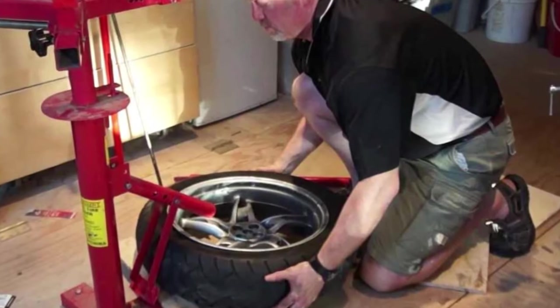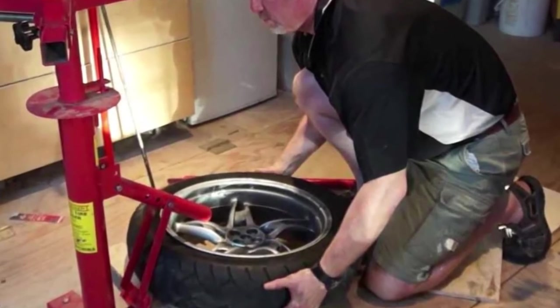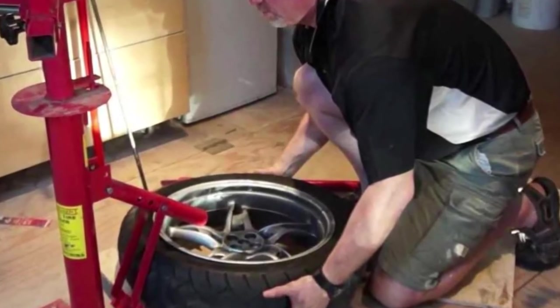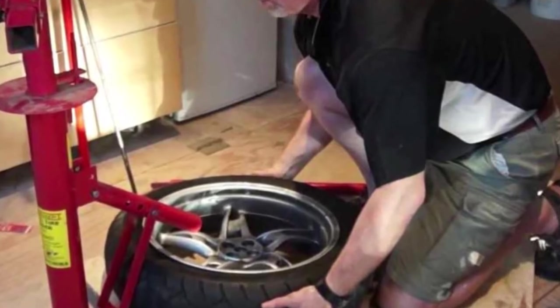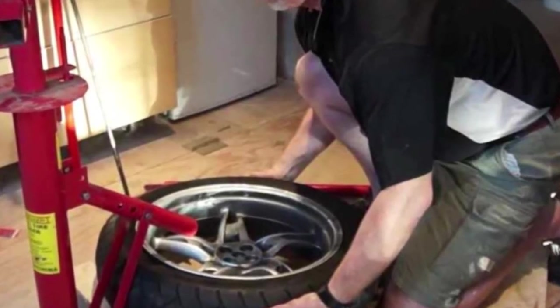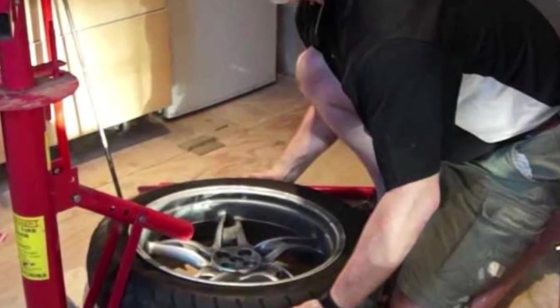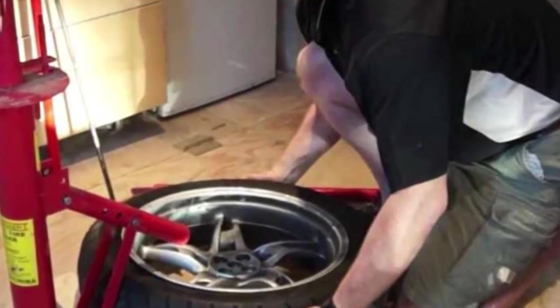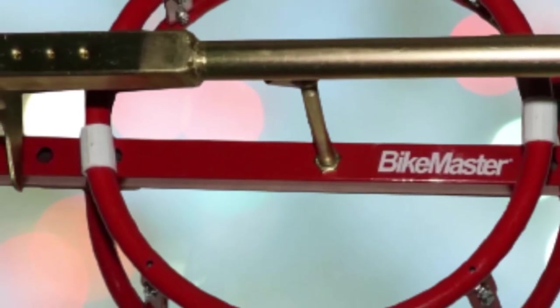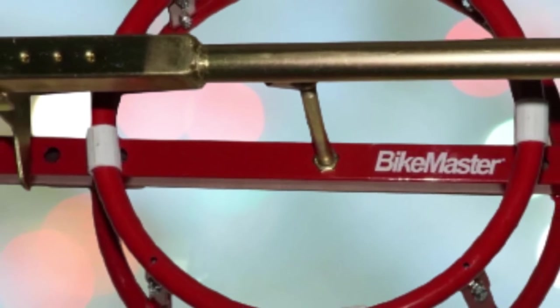It takes tire changes from frustrating to quick and easy, smoothing out the process with an included adjustable bead breaker paired with an extra-long handle just for stubborn beads. It'll work on most motorcycle and motocross wheels between 16 and 21 inches in size. This product is simple and doesn't come with fancy frills, but it'll get the job done in no time.